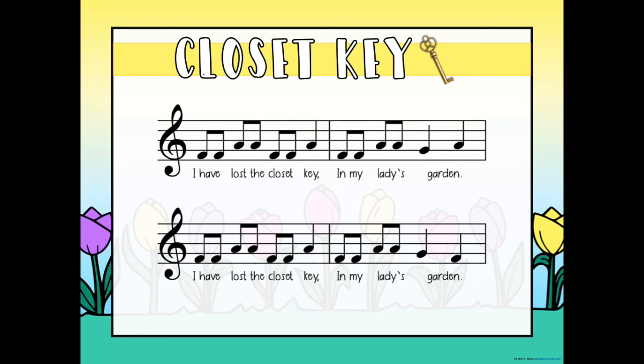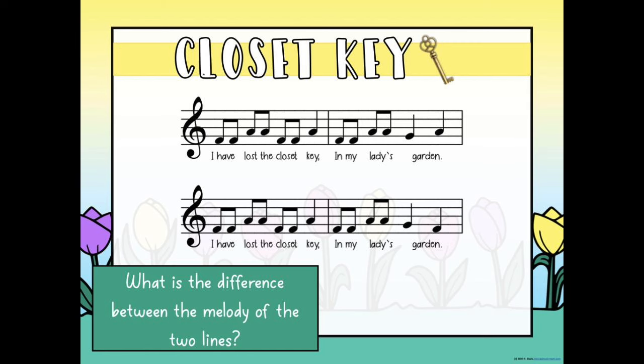Then I'll pop it up on the notation on the screen, even though we haven't learned the staff, and I say, 'This is a staff — it's kind of like a map. When things go up to the top, do you think they're going to sound high or low?' And they're like, 'High!' 'When they're down at the bottom, are they going to sound high or low?' 'Low!' It's going to show you if things are going up or down — it's just like a map, very easy to read. Then I'll sing it and have them trace the letters on the board, and I'll ask what part is different from the first line to the second line: the first time it goes up, the second time it goes down.